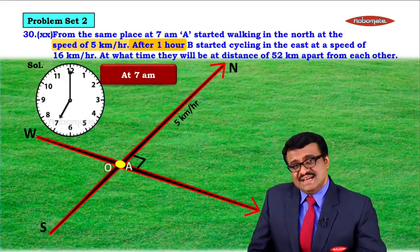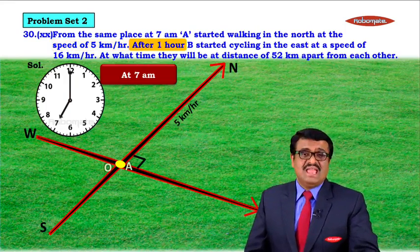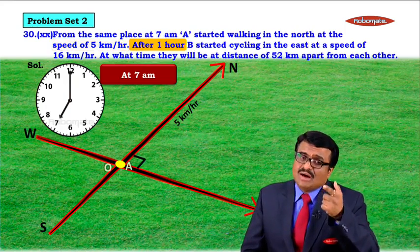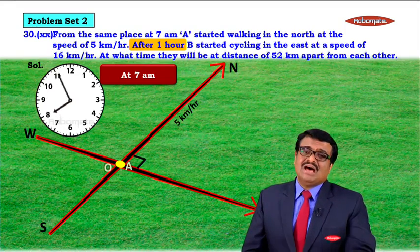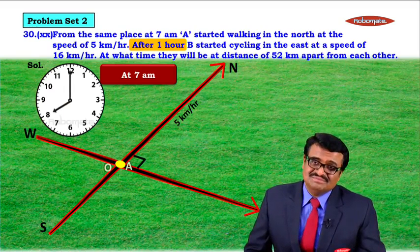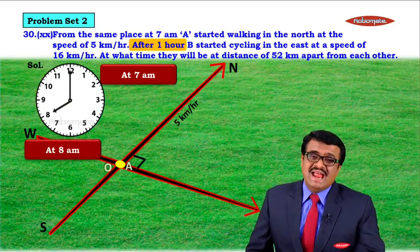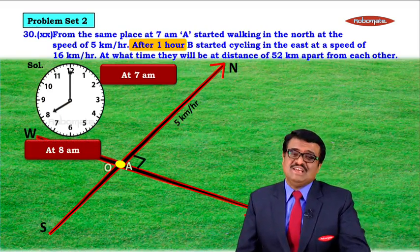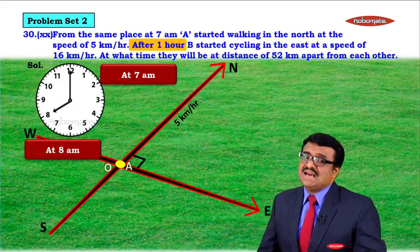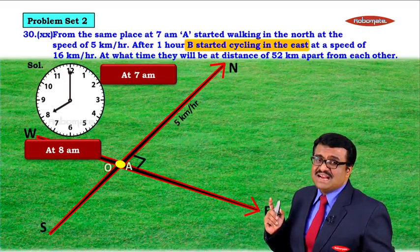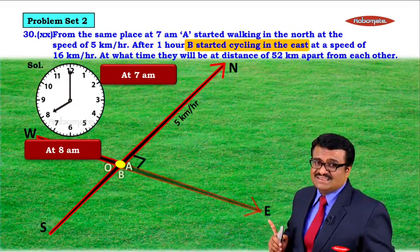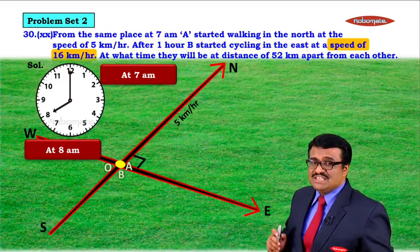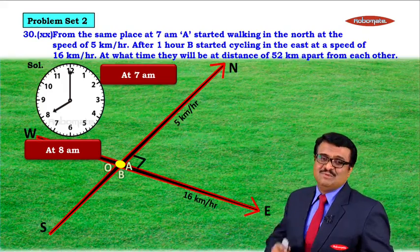Then, after 1 hour — A started at 7 a.m., so after 1 hour means at 8 a.m. — B started cycling in the east, meaning this direction, with a speed of 16 km per hour. So the speed of B is 16 km per hour.